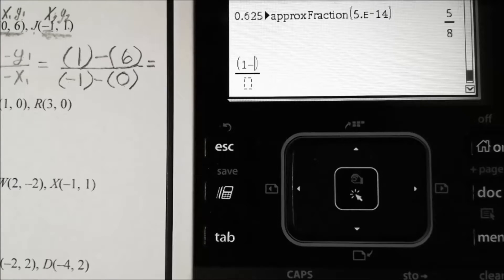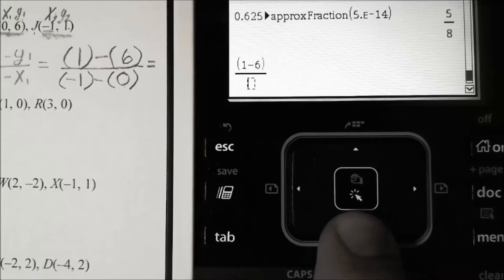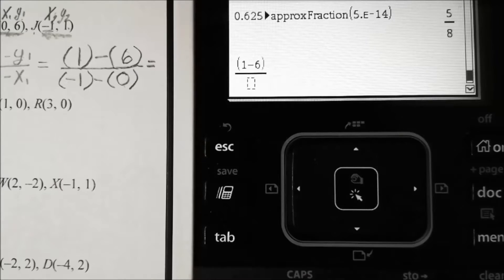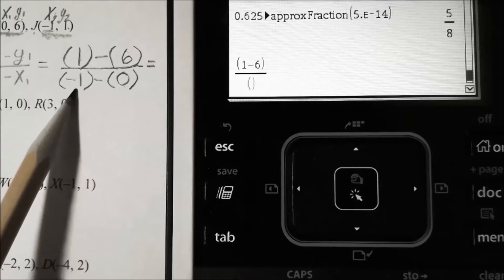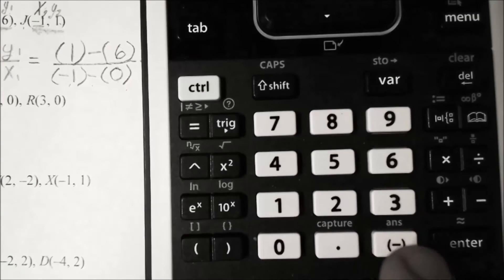Then I'm going to go down by pushing this button, and I need to put another set of parentheses. Now our value is negative one minus zero. Our negative sign is this button right here, so we're going to put negative one and then minus zero.